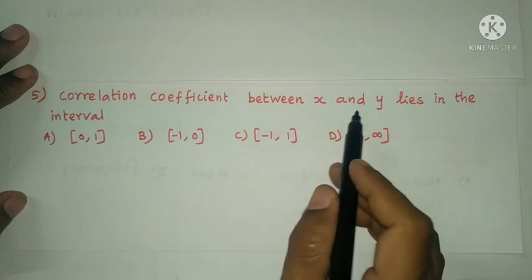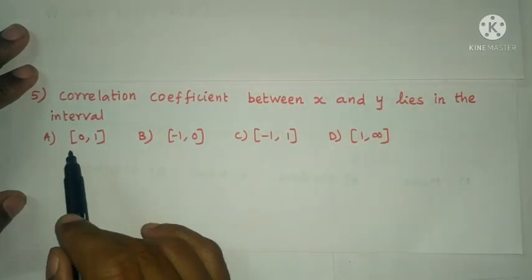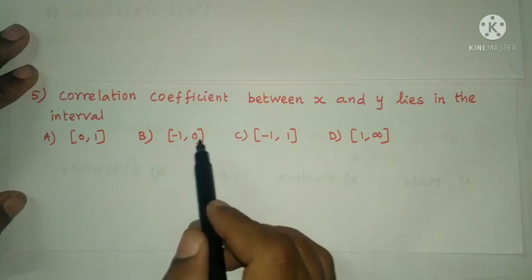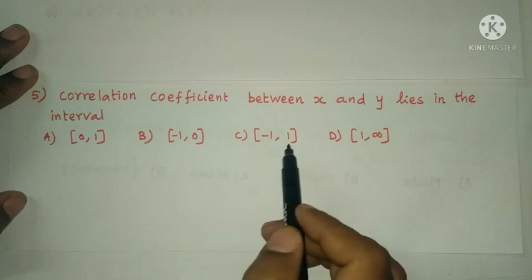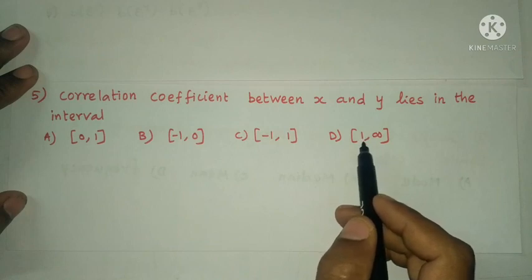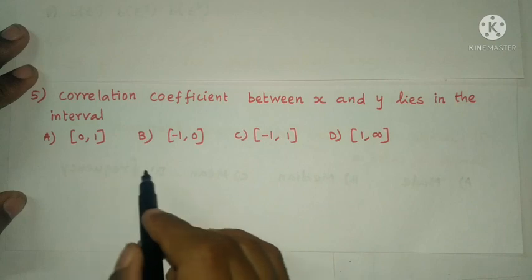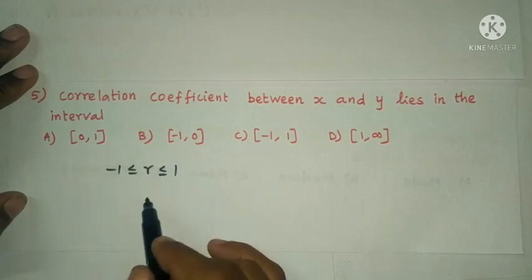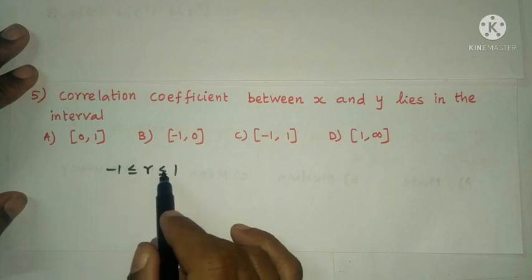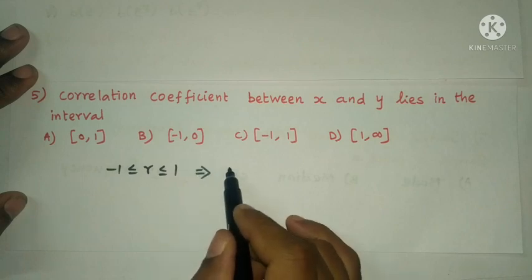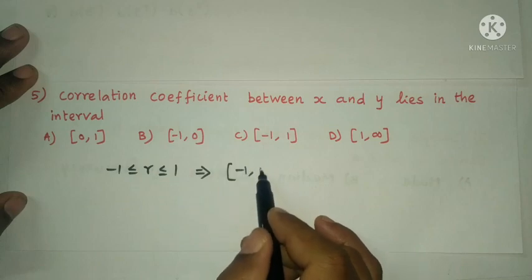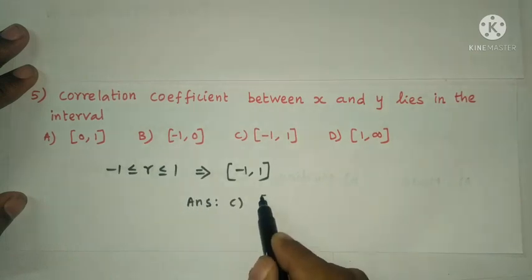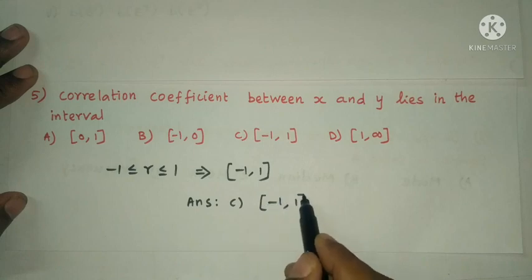Next question: the correlation coefficient R lies in what interval? Option A: closed interval [0, 1]; option B: closed interval [−1, 0]; option C: closed interval [−1, 1]; option D: closed interval [1, ∞). The correlation coefficient R lies between minus 1 and plus 1, that is −1 ≤ R ≤ 1. The answer is option C: correlation coefficient R lies in the closed interval [−1, +1].